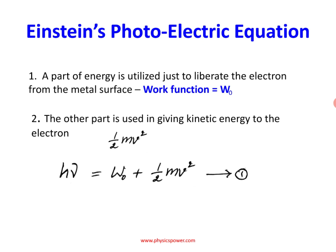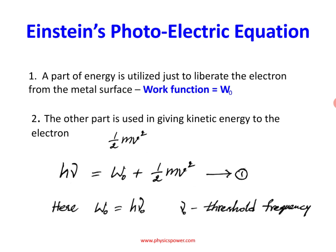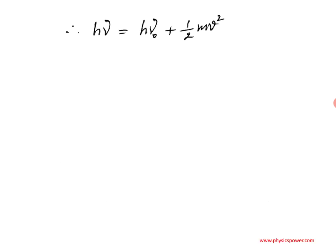Here W₀ can also be written as hμ₀, where μ₀ is the threshold frequency. Substituting hμ₀ into the equation, it becomes: hμ = hμ₀ + ½mv².